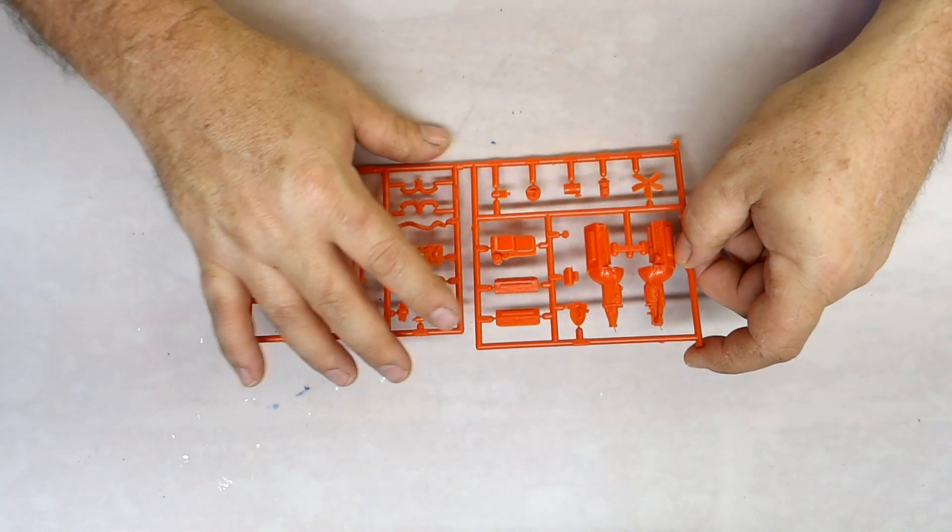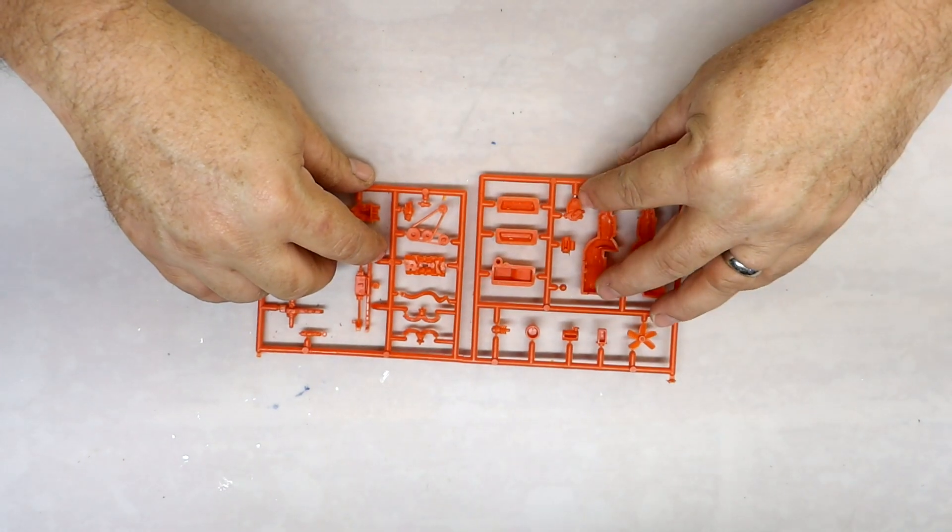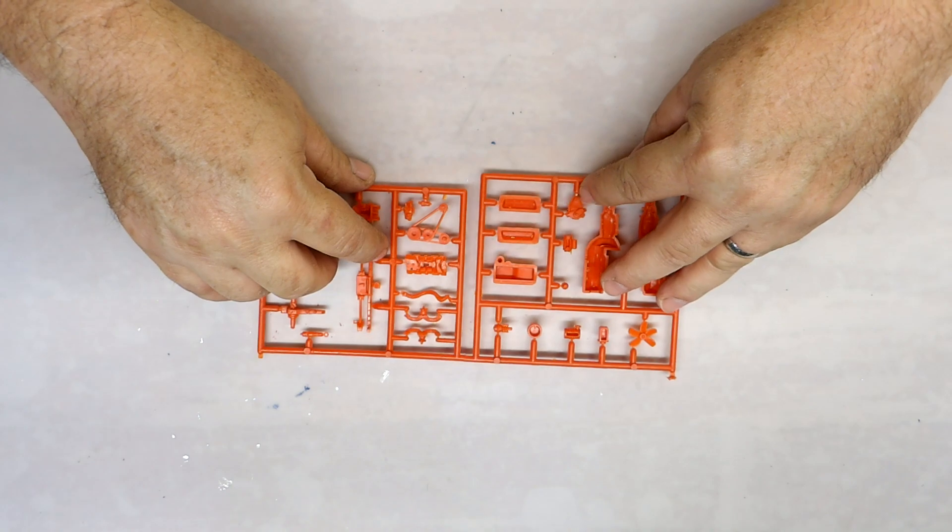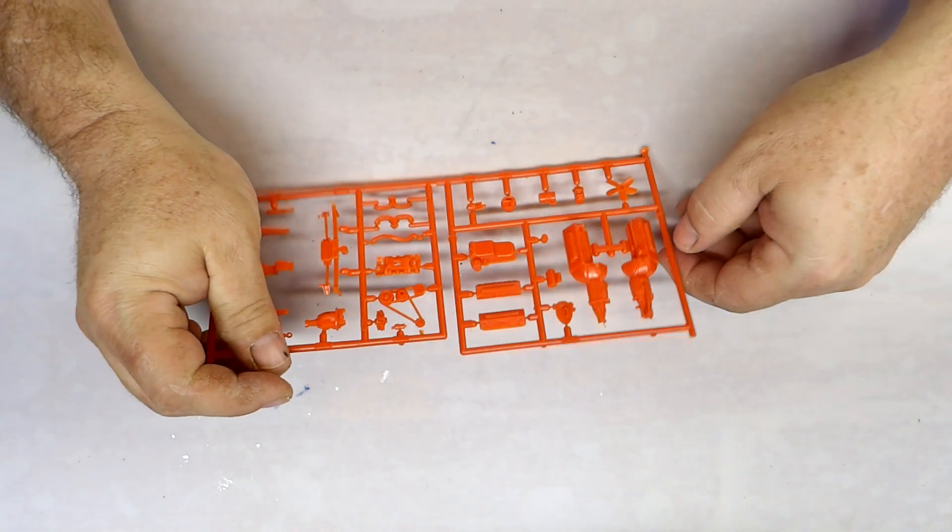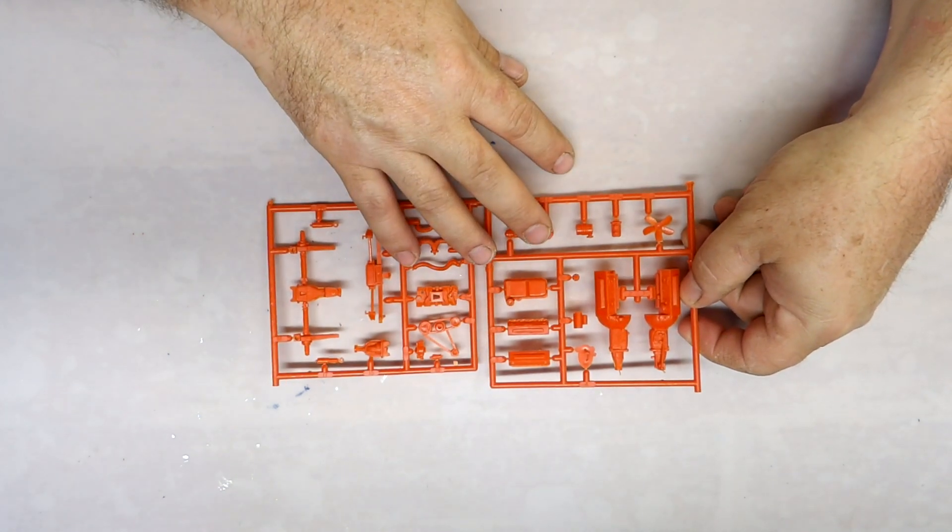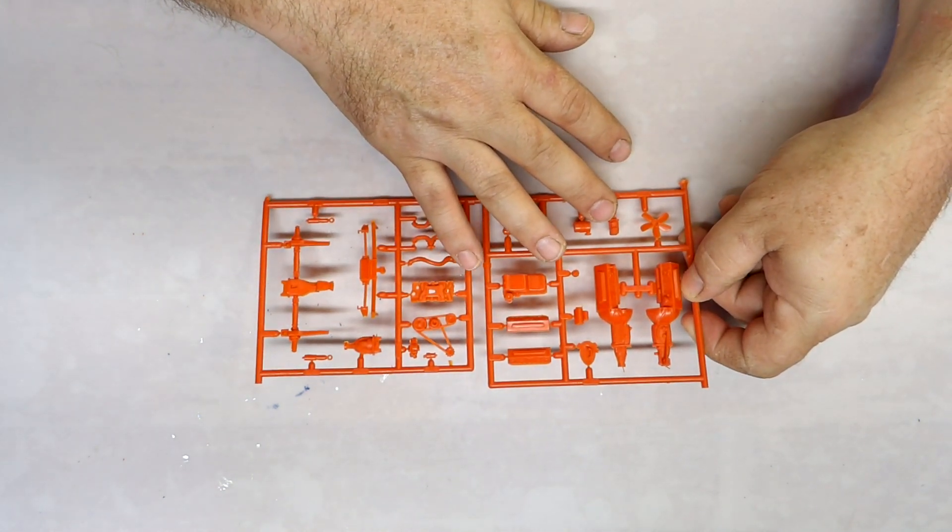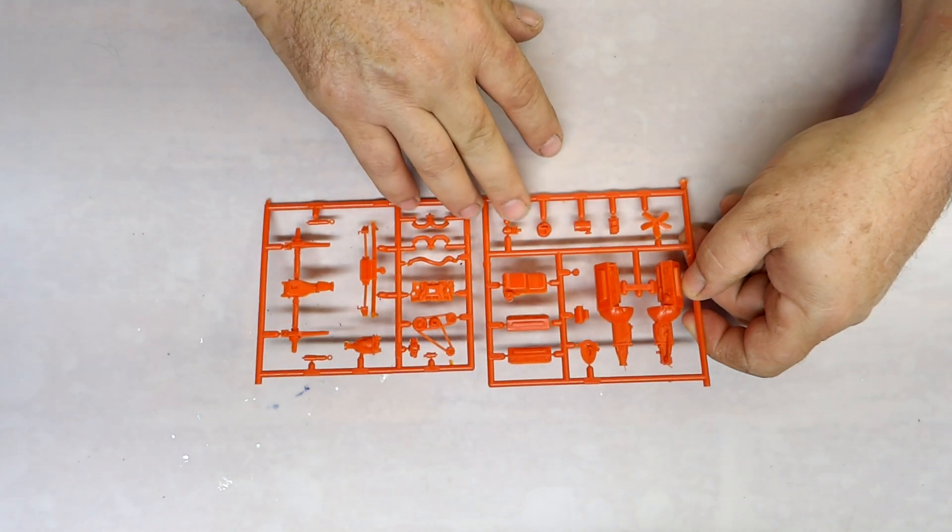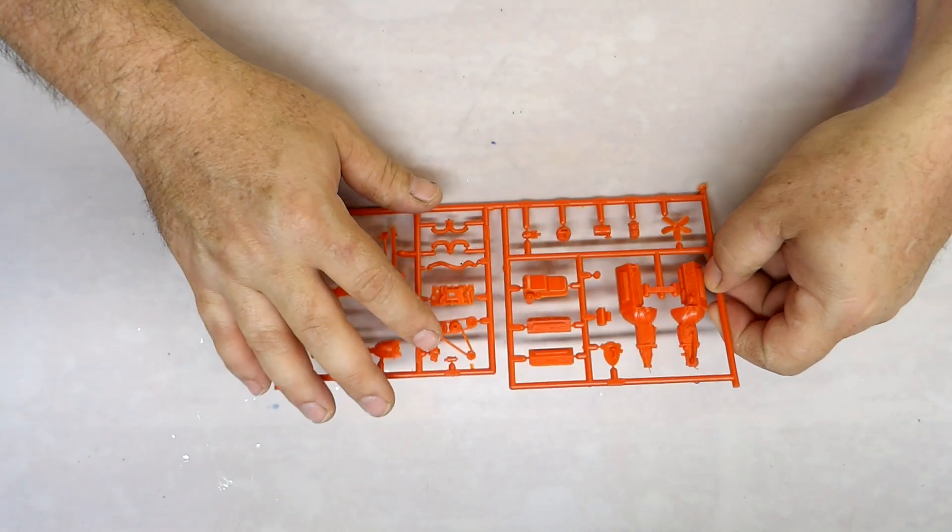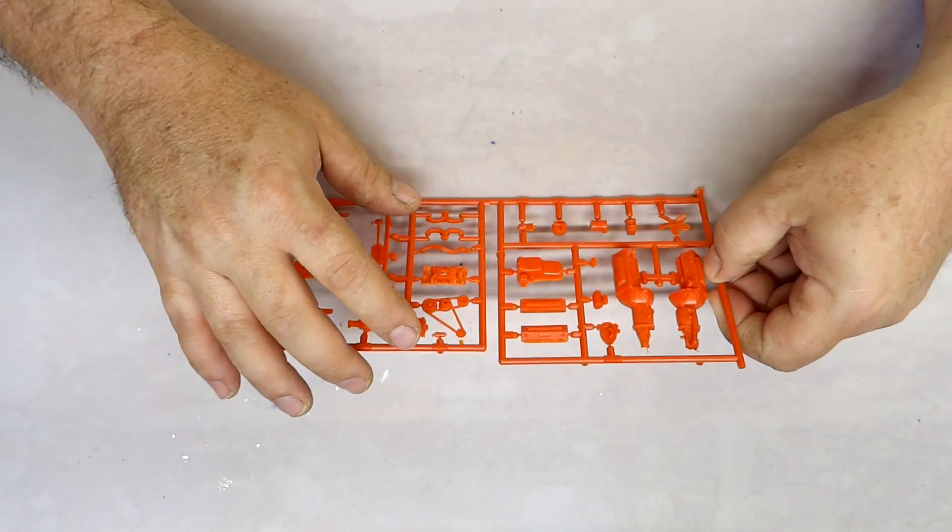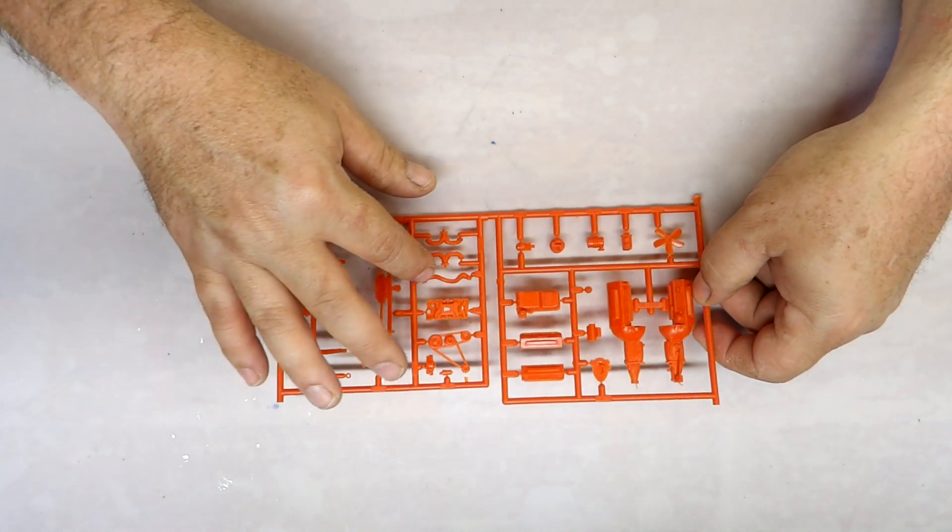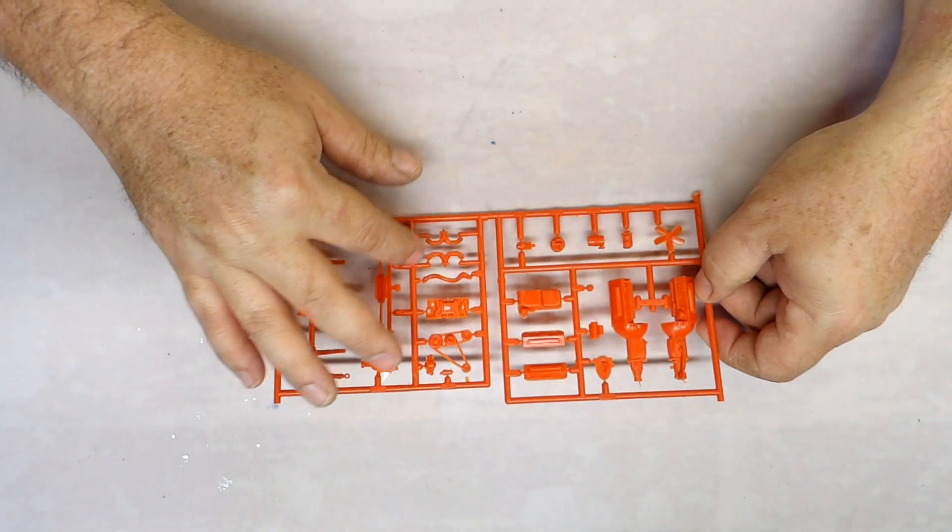Here's your water pump, timing chain cover, starter, distributor, fan, brake master cylinder. Here's the brake booster there. There's the belt assembly, carburetor, coil, intake, one of your radiator hoses. Here's your manifolds.